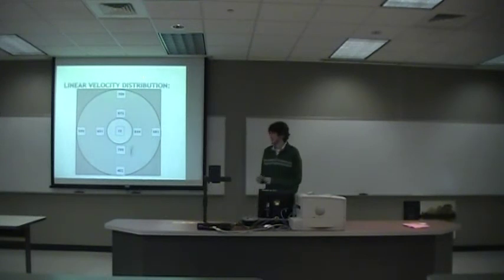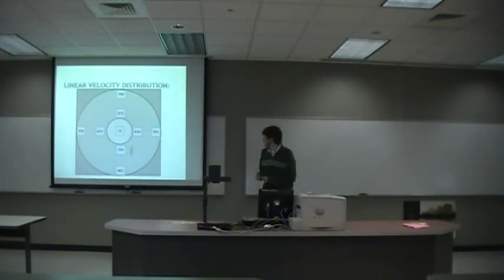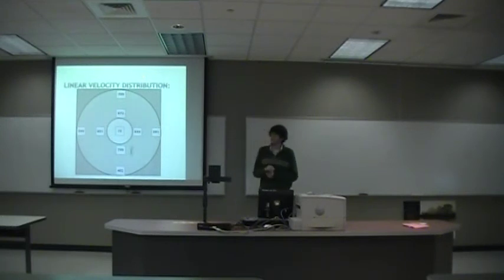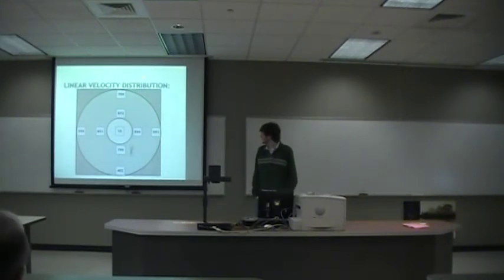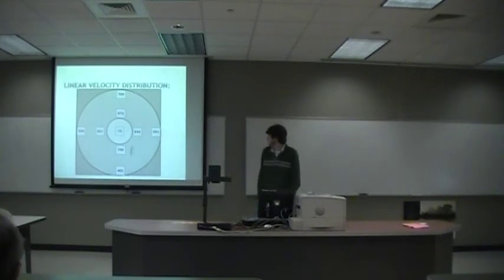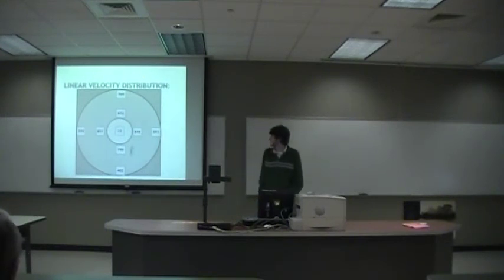Compiling all the data, this is basically what the box fan looks like with the velocities we got at each point. It's approximately 800 feet per minute on the inner radius, but the outer radius varied — the sides were around 600 feet per minute, with the bottom reading a lot lower than the top.